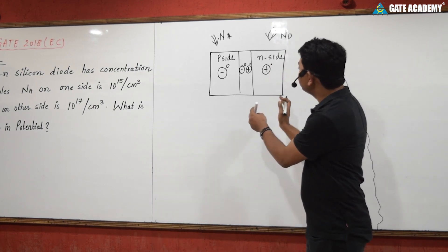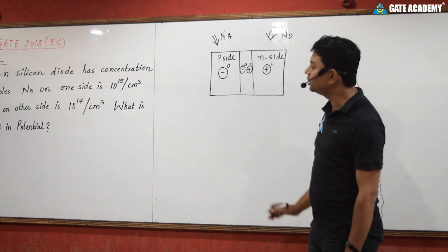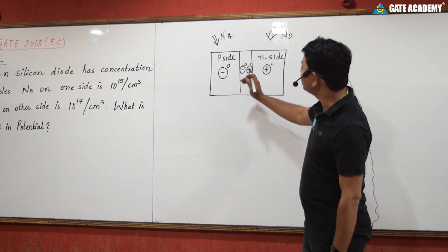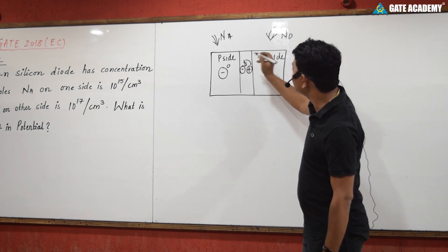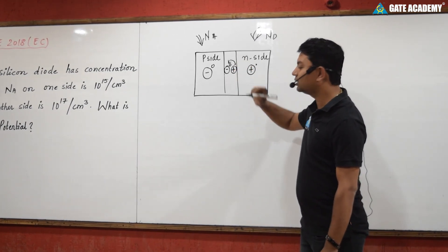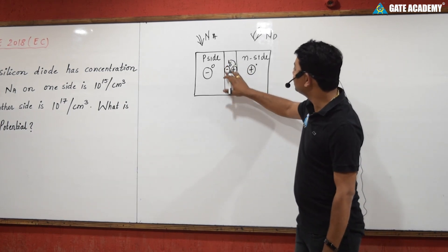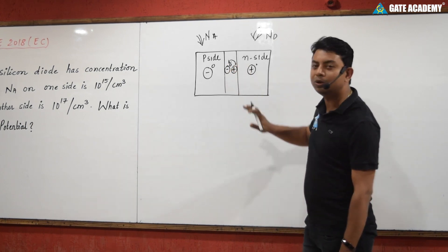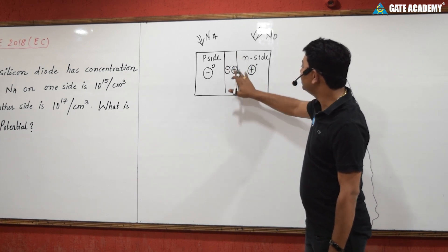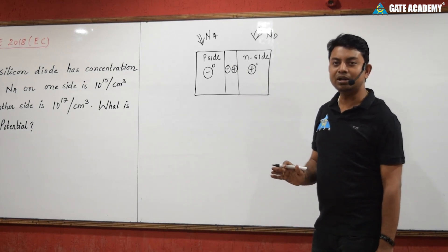Because of the difference in concentration, there are more holes on the P-side and more electrons on the N-side. Due to this concentration difference, electrons will go from the N-side to the P-side, where they undergo recombination with holes. The result of this is that we lose an electron-hole pair.